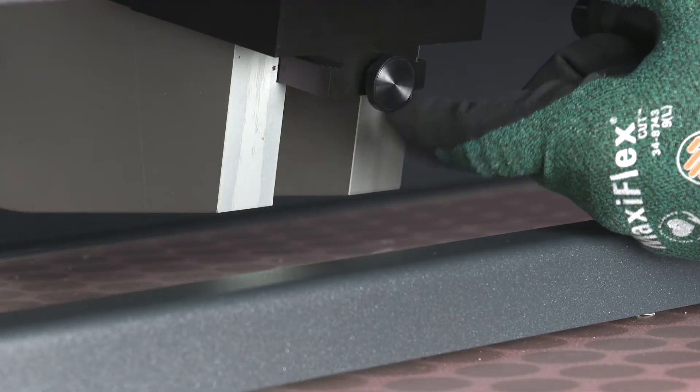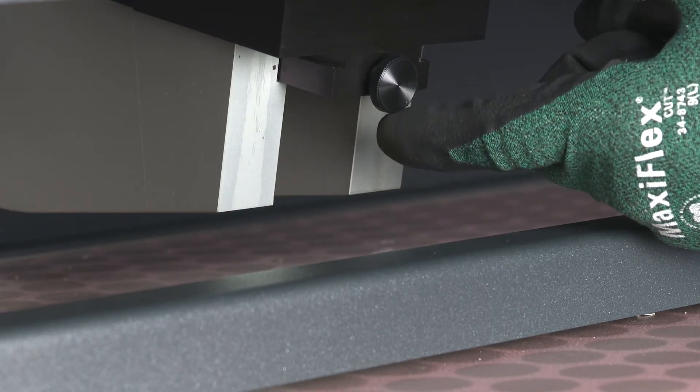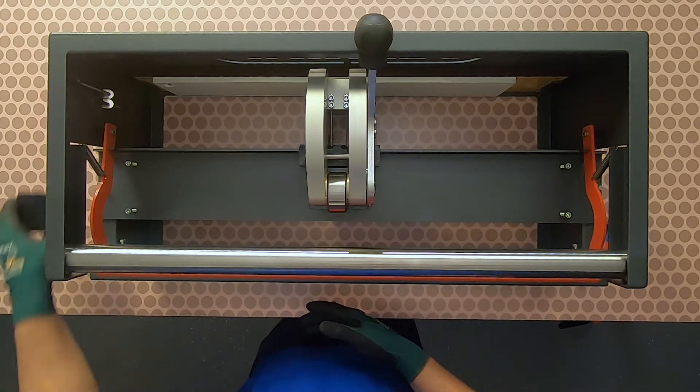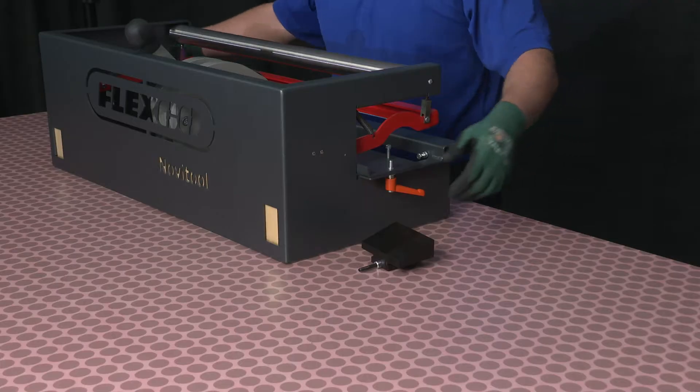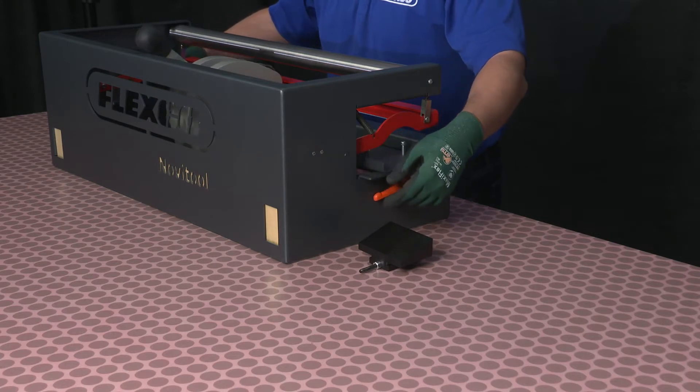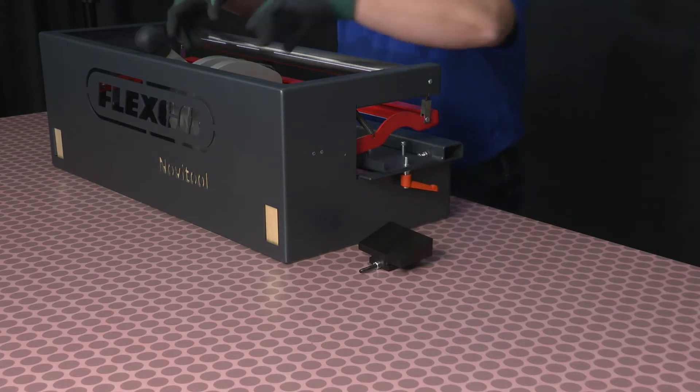For the punch block, first loosen the fixation screw on the c-frame wedge until you're able to slide it out. Ensuring the tray is in the forward position, twist the c-frame away from the support table to remove.